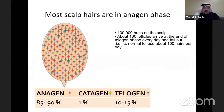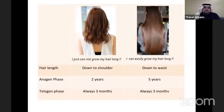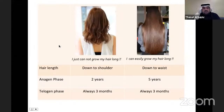Most scalp hair — about 90% — is in anagen phase, about 1% is in catagen, and 10% is in telogen, which sheds normally every day. Hair length is genetically determined: a patient who can only grow hair to her shoulder has a genetically determined anagen phase of about two years, while one who grows hair to her waist may have an anagen phase of five years. Once hair shifts into telogen, it stays there for three months before falling out.